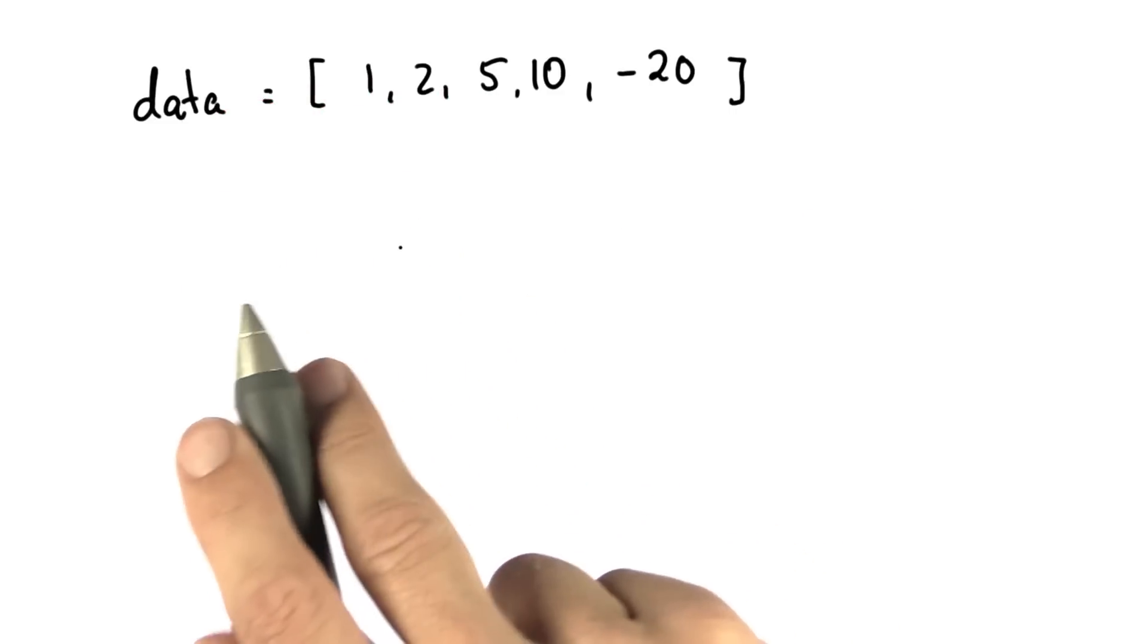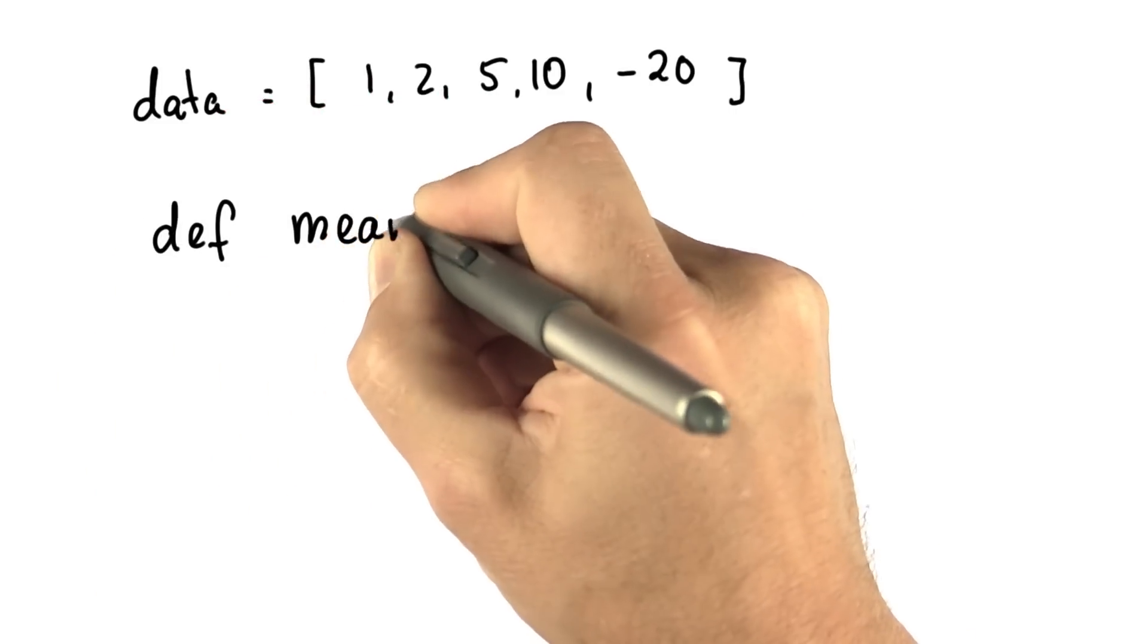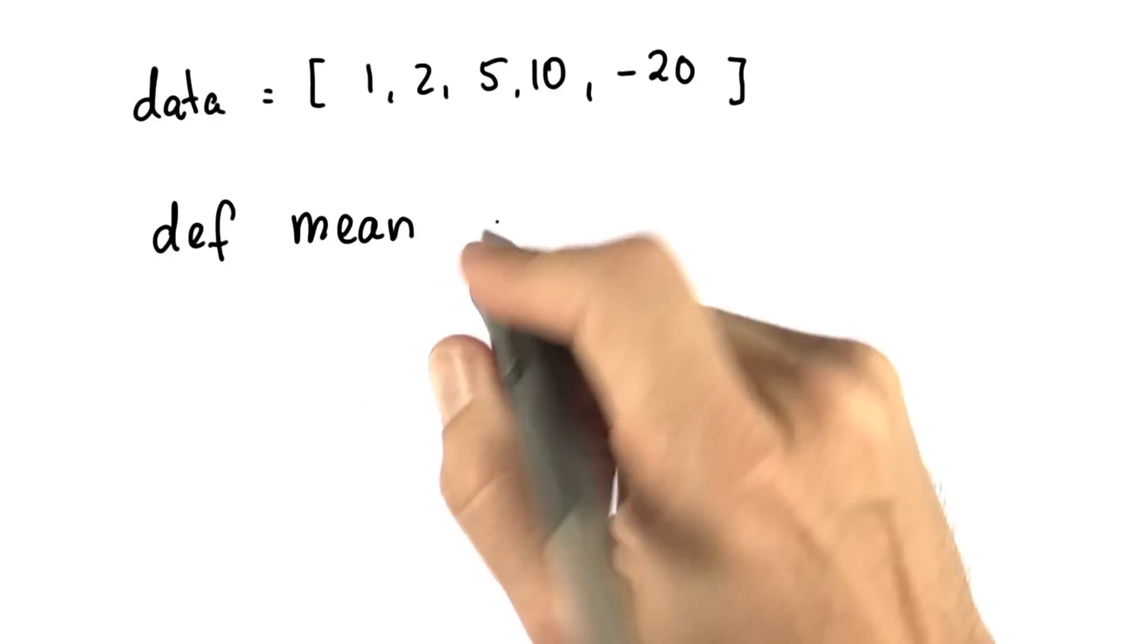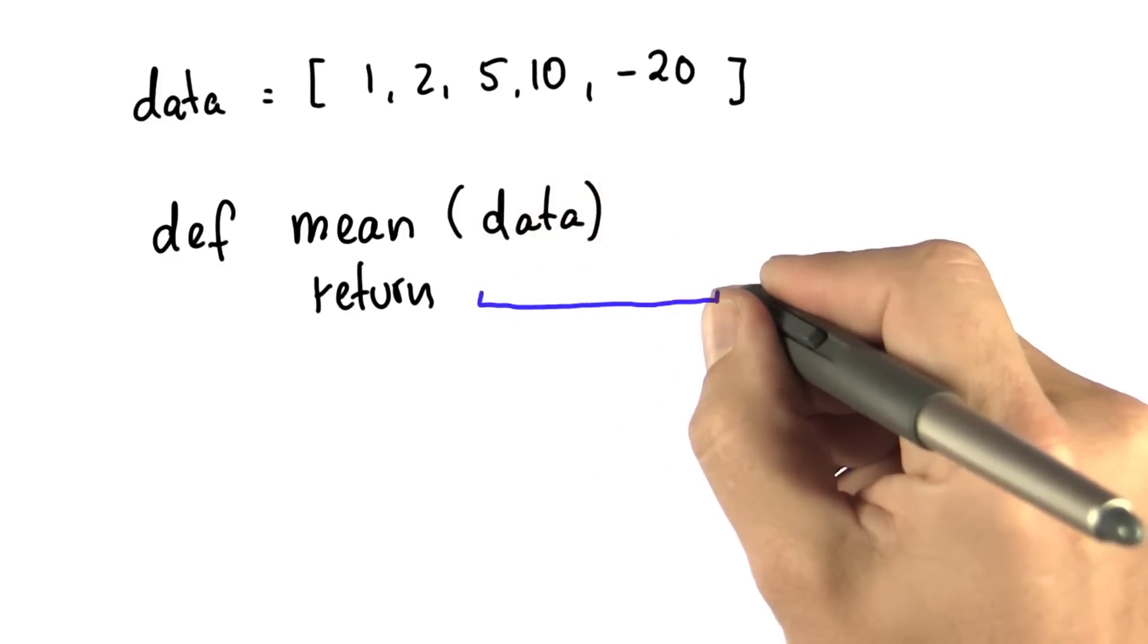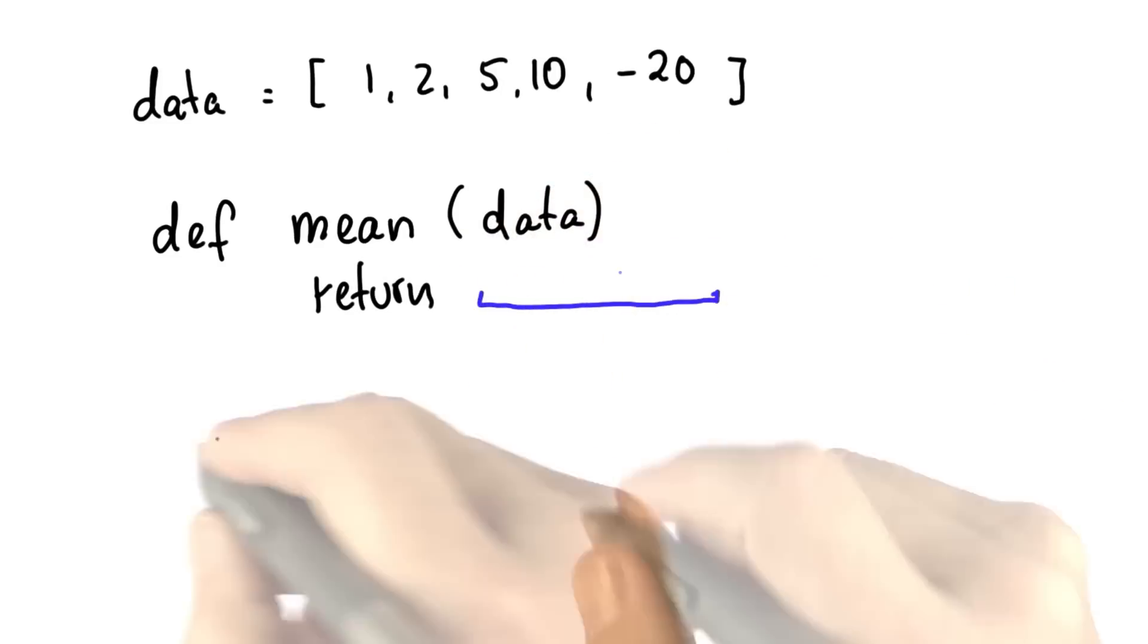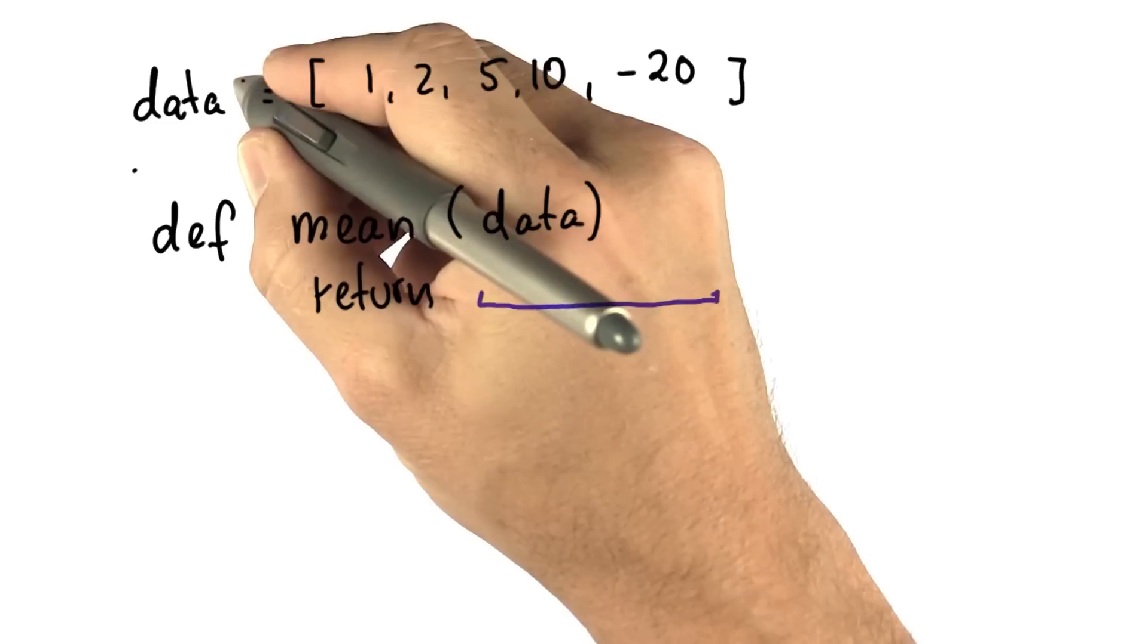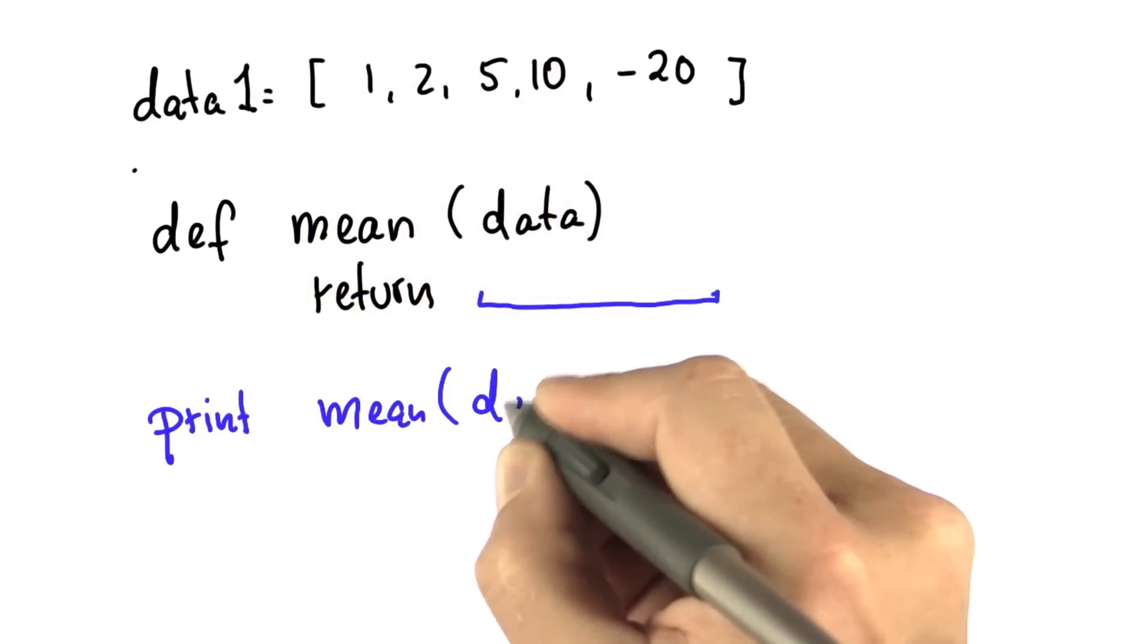So in the first exercise, we will calculate the mean of data. We'll define what mean means. Mean is computed of something, computed of data. There's this funny notion of a return where you put the mathematical expression for the mean. When you want to print the mean of this specific data set here, let's call this data1, you would say print mean of data1.